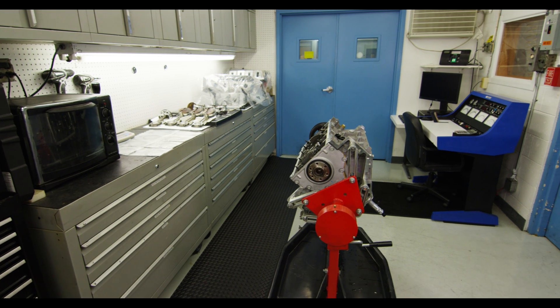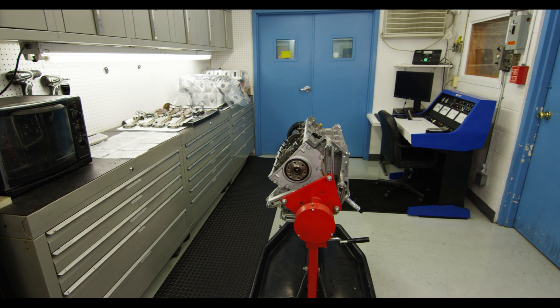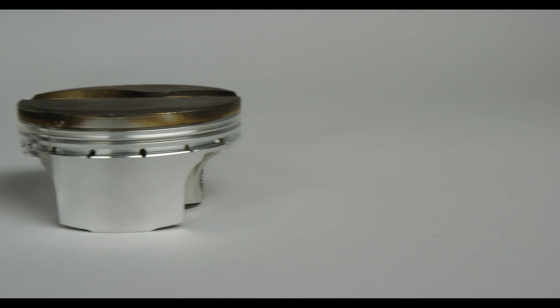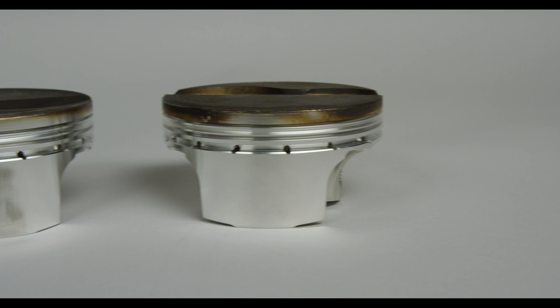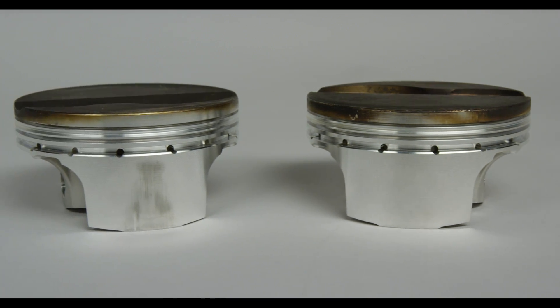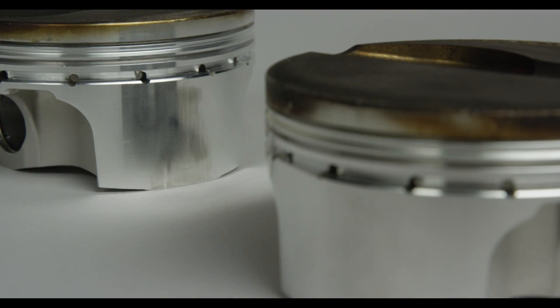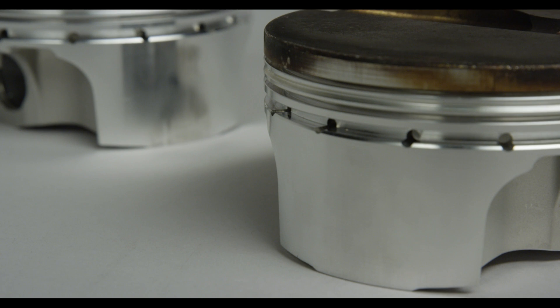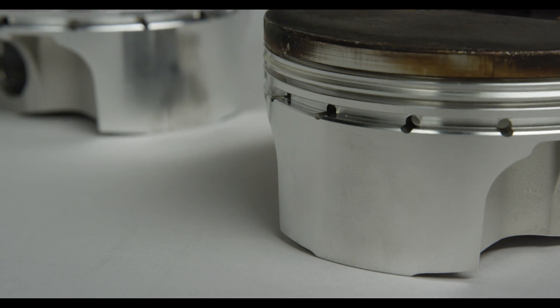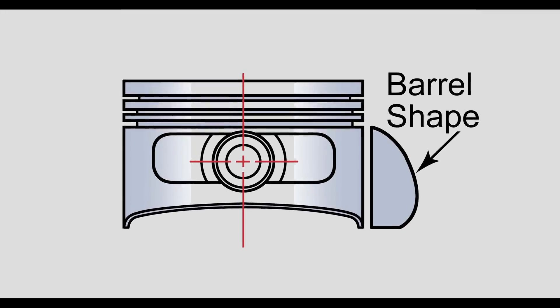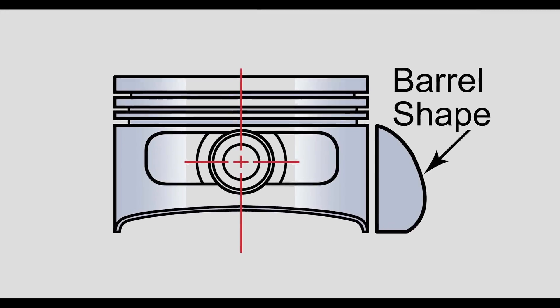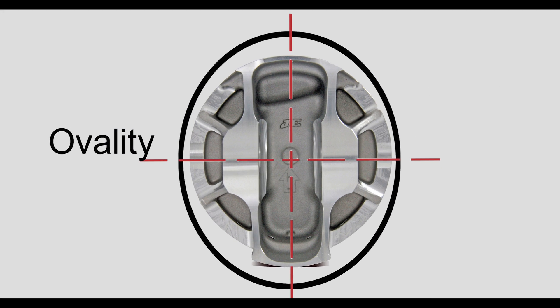We're at JE Pistons Research and Development Department today, doing some shape and ovality testing on some JE LS3 pistons. What shape and ovality is: pistons that we make are made of aluminum, so they expand quite a bit. We can compensate for that by this rather complex shape and ovality that is required on the piston.